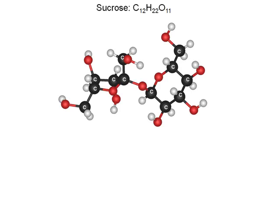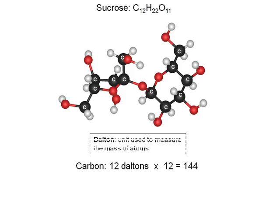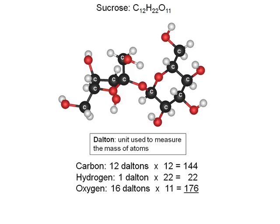Carbon has a weight of 12 Daltons. Dalton is just a unit of measure we use for the mass of atoms, since atoms are extremely small. Carbon has a mass of 12 Daltons, hydrogen has a mass of 1 Dalton, and oxygen has a mass of 16 Daltons.